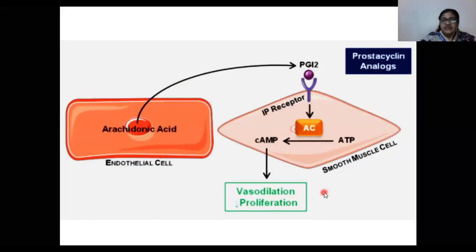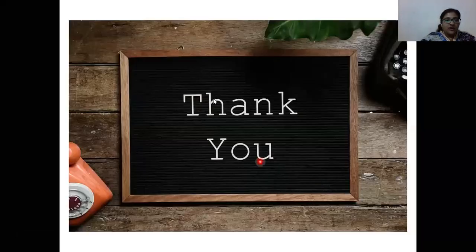Dipyridamole may be used for prophylaxis of angina pectoris, but its efficacy has not been proven. It produces adverse effects including worsening of angina, dizziness, and headache. Its mechanism involves endothelial cells producing PGI₂ (prostaglandin), which converts ATP to cAMP, causing vasodilation.